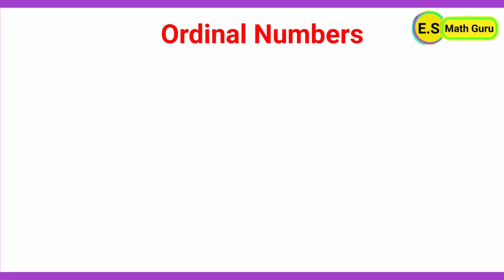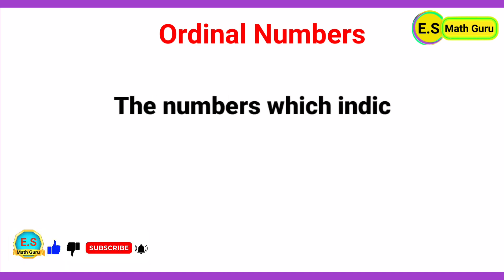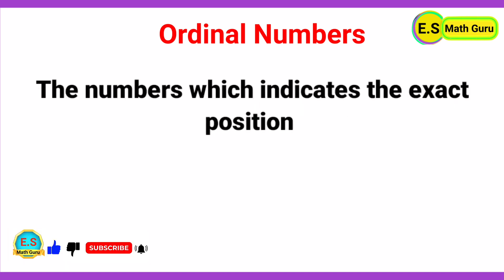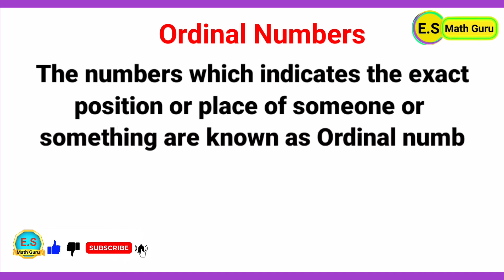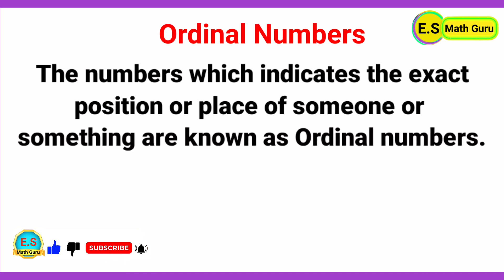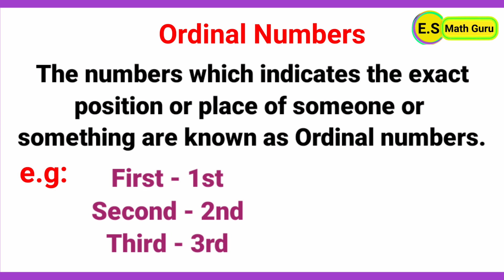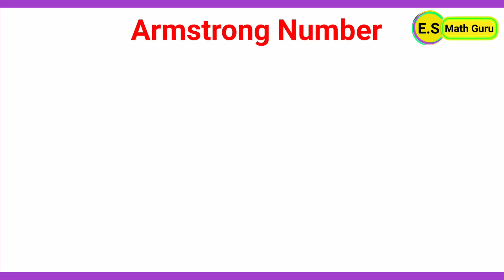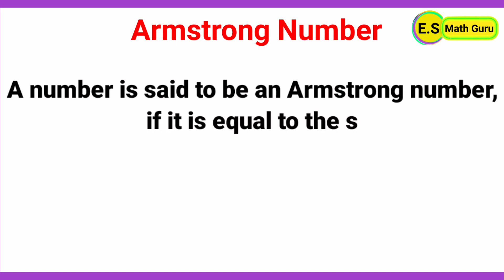The first one: ordinal numbers. The numbers which indicate the exact position or place of someone or something are known as ordinal numbers. Examples: first, second, third, and so on.